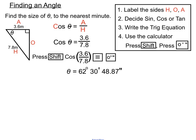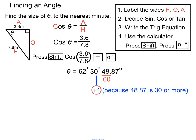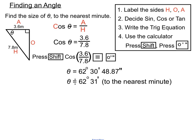This question asks us to round off to the nearest minute. So we round after the minutes and check the seconds section. The seconds value is 48.87 out of 60 — that's well past halfway, since 30 out of 60 is the halfway point. So we round the minutes up by 1, because 48.87 is 30 or more. Our final answer is 62 degrees, 31 minutes.